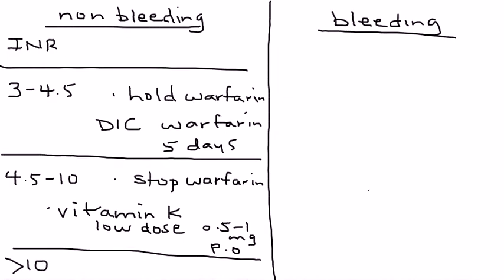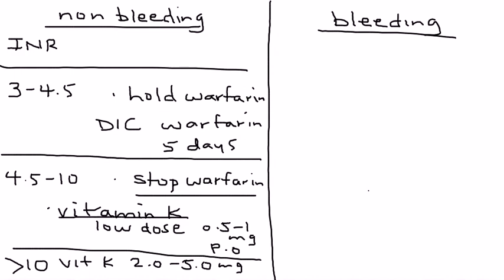The final non-bleeding scenario is when the INR is greater than 10. Of course, you stop the warfarin, but here you give a higher dose of vitamin K — usually 2.0 to 5.0 mg. Keep in mind that this vitamin K doesn't work immediately; it takes about 6 to 24 hours to take effect, so it is not an immediate reversal.